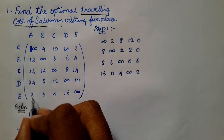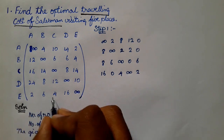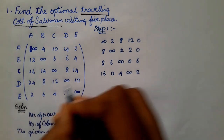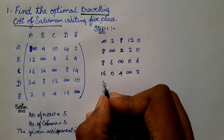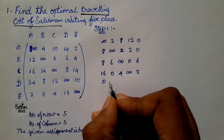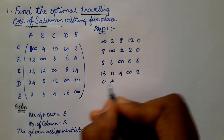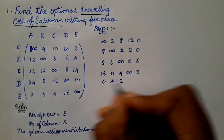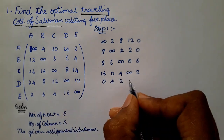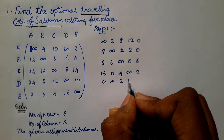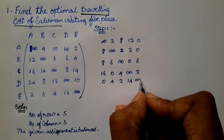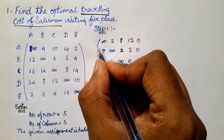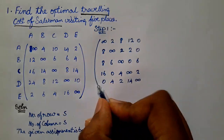In the last row, 2 is the least: 2 minus 2 is 0, 6 minus 2 is 4, 4 minus 2 is 2, 16 minus 2 is 14, and last is infinity. This completes Step 1 — row-wise reduction is done.